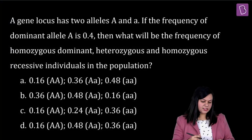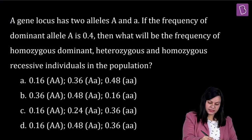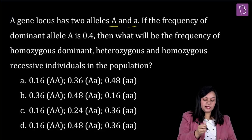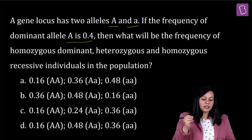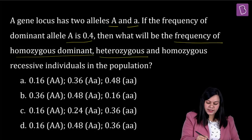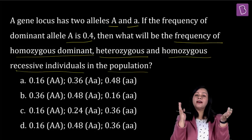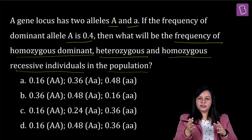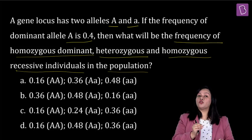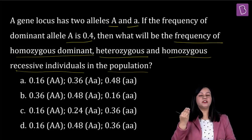Let us see this question. A gene locus has two alleles — allele capital A and small a. If the frequency of dominant allele capital A is 0.4, then what will be the frequency of homozygous dominant, heterozygous and homozygous recessive individuals in the population? This is a question based on population genetics, based on Hardy-Weinberg's equation or equilibrium, which you have learned in chapter evolution.